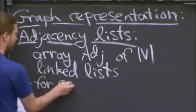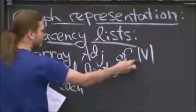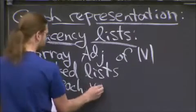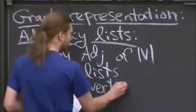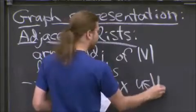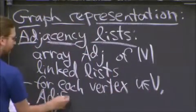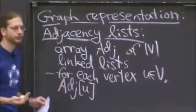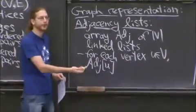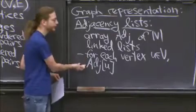And the idea is that this array is indexed by a vertex. So we're imagining a world where we can index arrays by vertices. So maybe you just label your vertices 0 through v minus 1. Then that's a regular array.